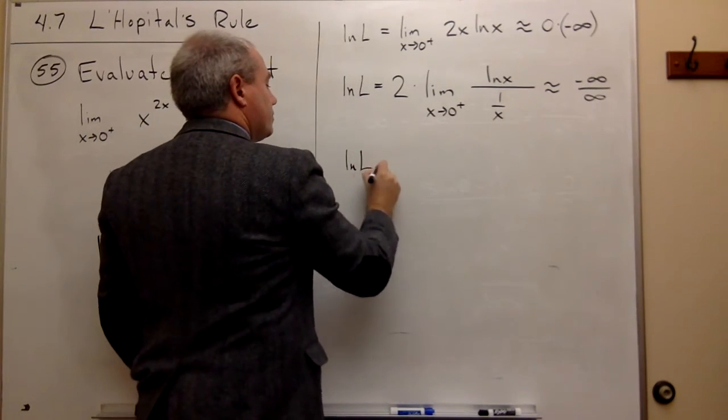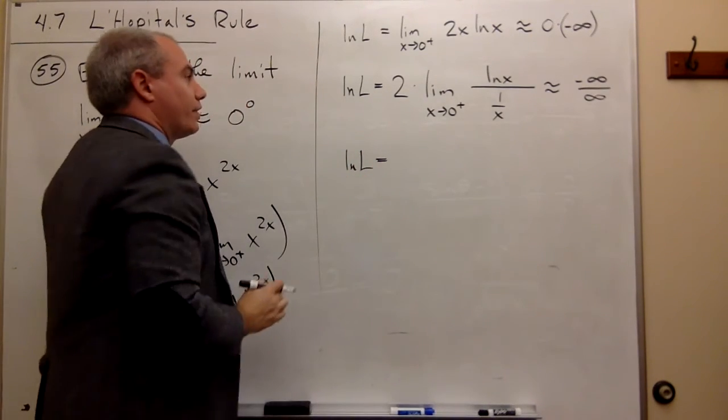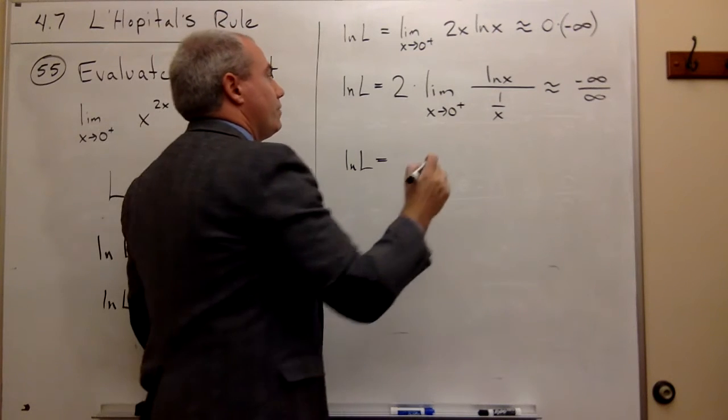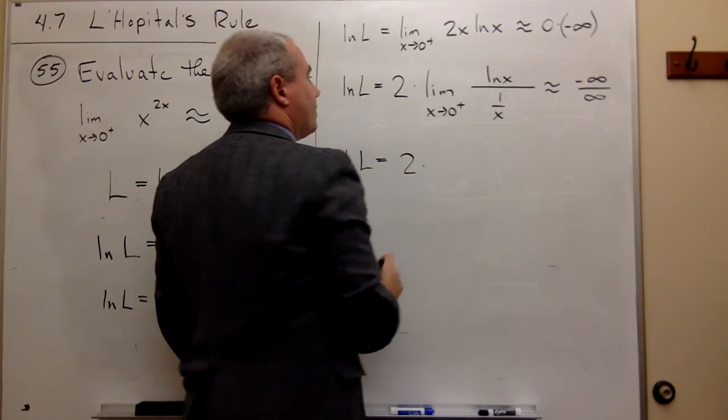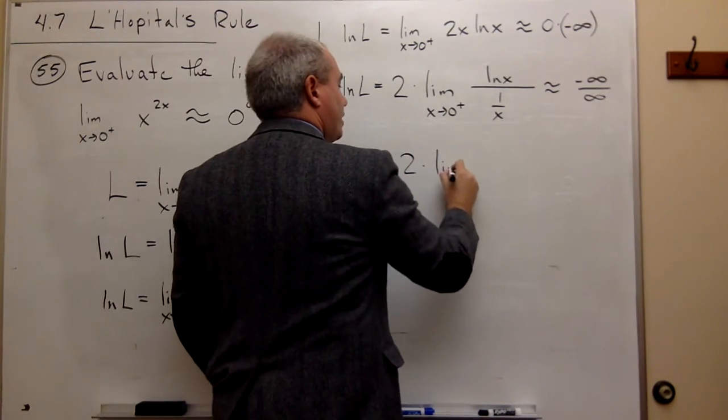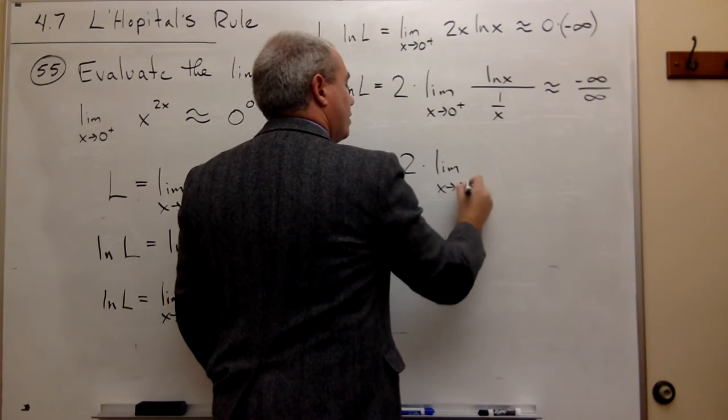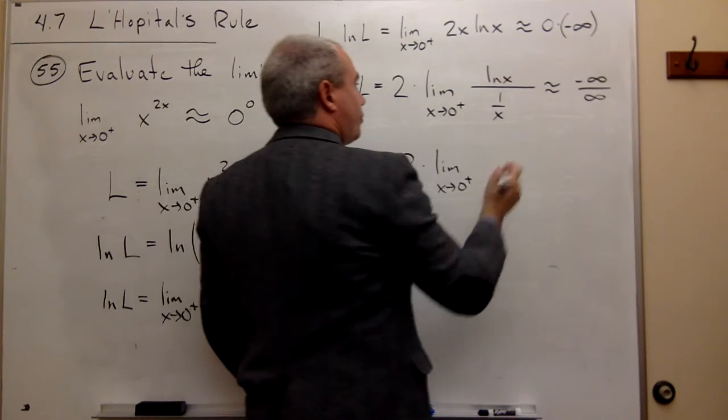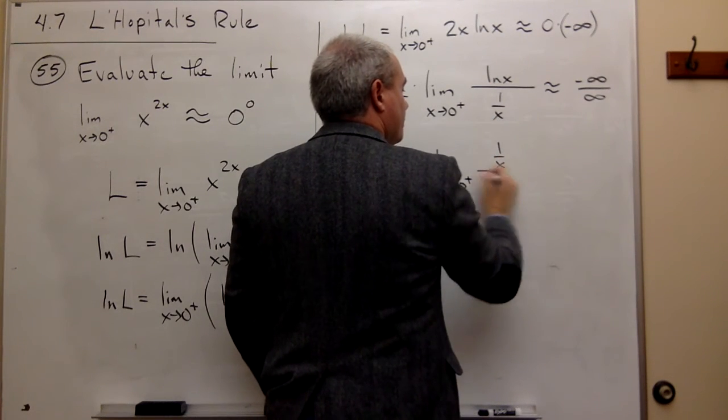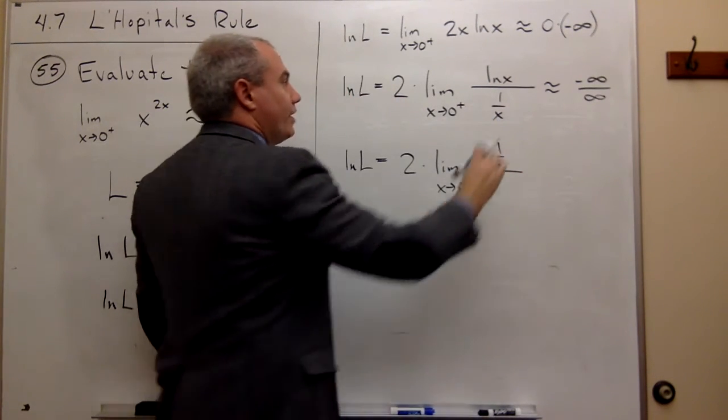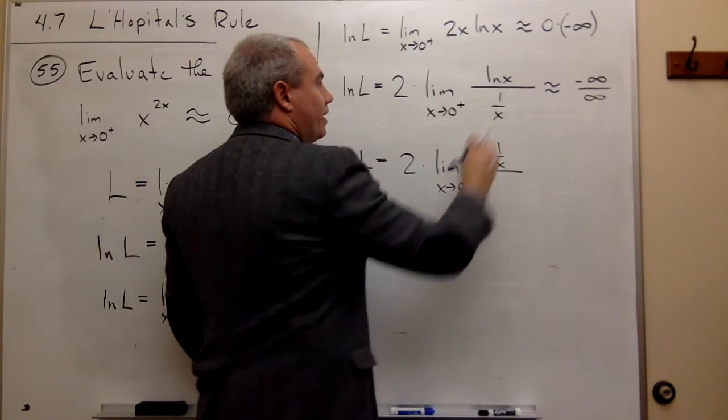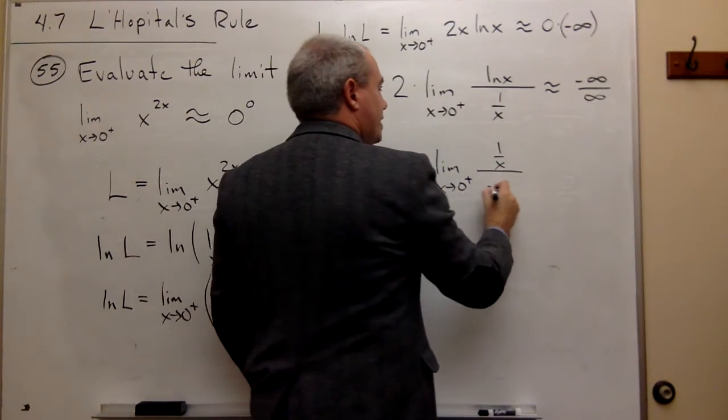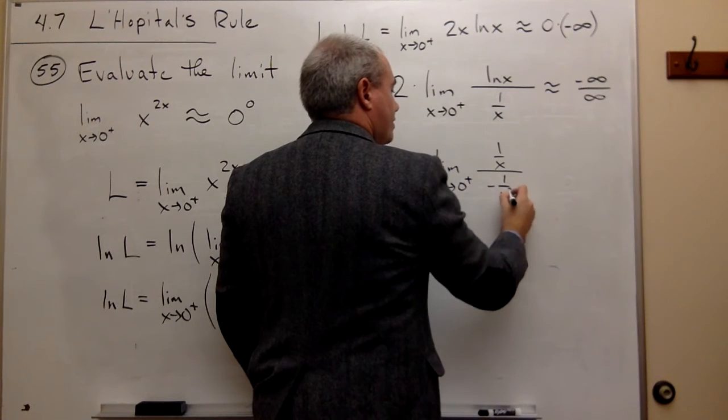So I get ln of L, still hanging around over here on the left side, is equal to 2 times, now I'm ready to take limit as x goes to 0 from the right of the derivative of the top. Well, the derivative of ln of x is 1 over x over the derivative of the bottom. But the derivative of 1 over x is negative 1 over x squared.